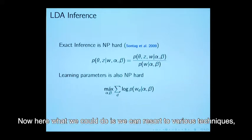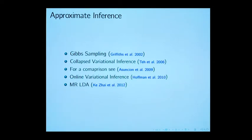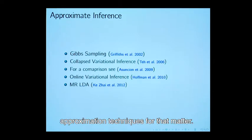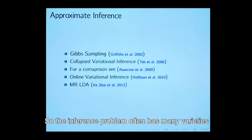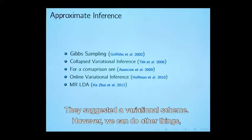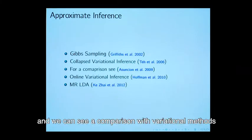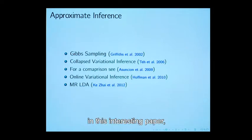What we could do is we can resort to various approximation techniques for that matter. The inference problem often has many varieties. What David and company suggested was initially something different. They suggested a variational scheme. However, you can do other things, for example Gibbs sampling, collapsed variational inference, and you can see a comparison with variational methods in this interesting paper.